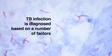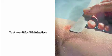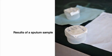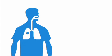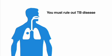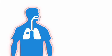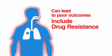TB infection is diagnosed based on a number of factors: a patient's medical history, test result for TB infection, chest radiograph, physical exam, and in certain circumstances, results of a sputum sample. If a person tests positive for TB infection, you must rule out TB disease before beginning treatment for TB infection. Treating a patient for TB infection when they really have TB disease can lead to poor outcomes, including drug resistance.